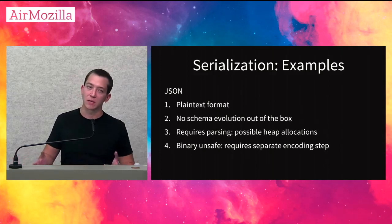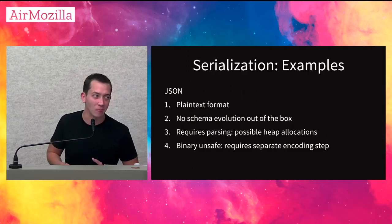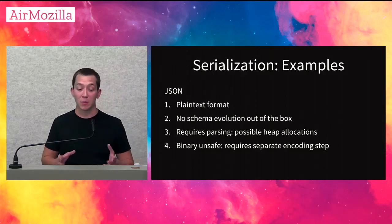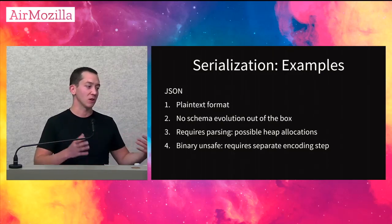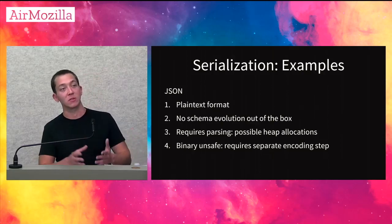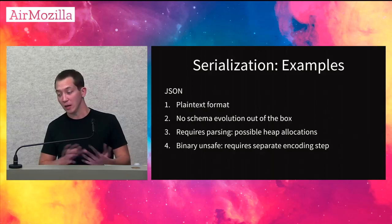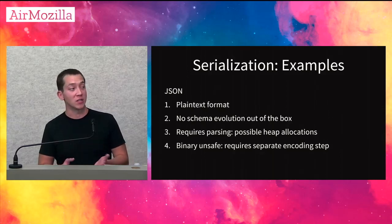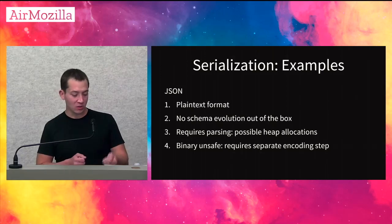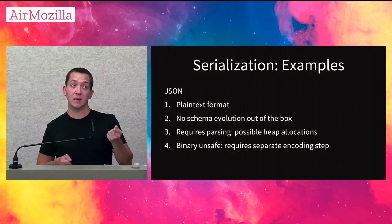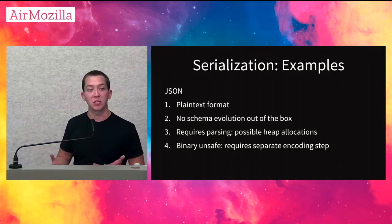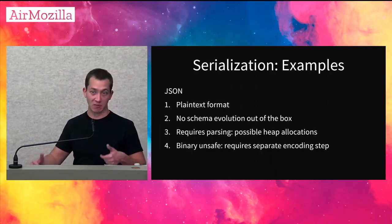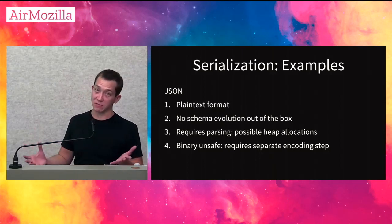First, tried and true — we love it, we hate it — JSON. It's a plain text format, human readable. Out of the box there's no schema evolution, meaning no standard way to structured change what the data is — take away fields, add fields. JSON also requires parsing, and when we parse we don't necessarily know ahead of time how much memory we'll need, which means we might need heap allocations. And if we want to store arbitrary binary data like a PNG file, we have to do an encoding step like base64.